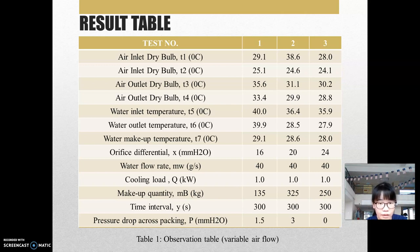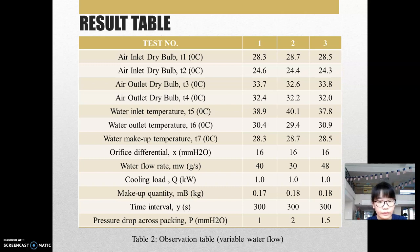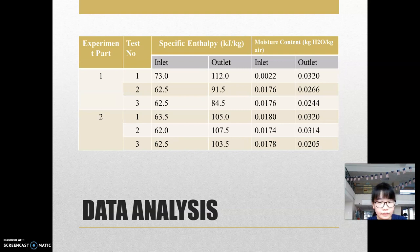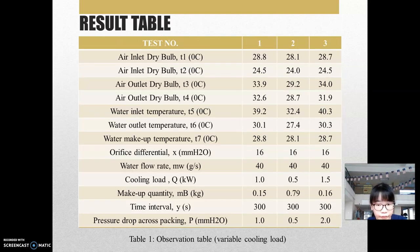However, the orifice differential changes from 16 to 17 to 74 across the variable airflow tests. For Part 2, the variable water flow rate experiment, all other parameters are the same as Part 1, and the orifice differential remains constant. The only difference is the water flow rate, which changes from 40 to 70 to 80 grams per second. For the variable cooling load experiment, which is Part 3, the orifice differential and water flow rate remain constant. The only difference is the cooling load, which changes from 0.5 to 1 to 1.5 kW.